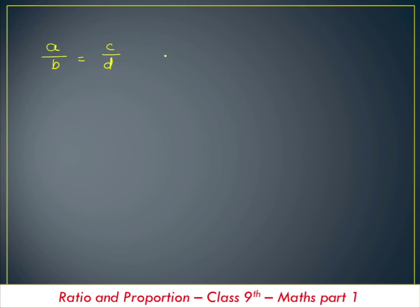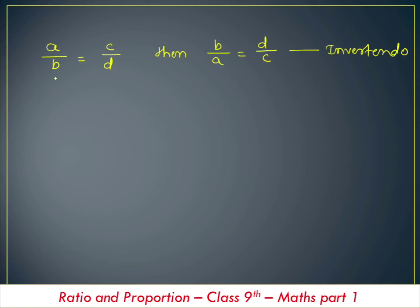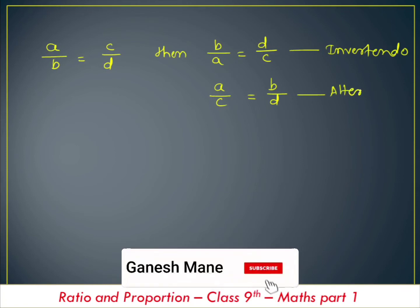Then in that case, if we do b divided by a is equal to d divided by c, this property is called invertendo. So this is the first property of equal ratios. In the same way, if a divided by b is equal to c divided by d, and a divided by c is equal to b divided by d, this property is called alternendo.